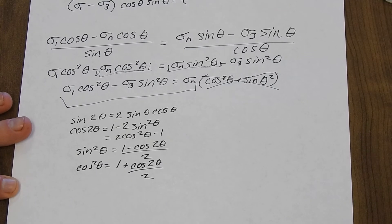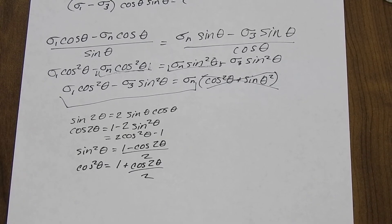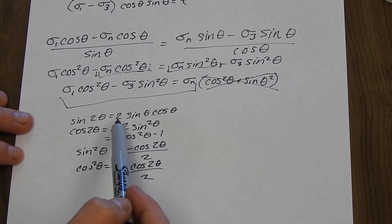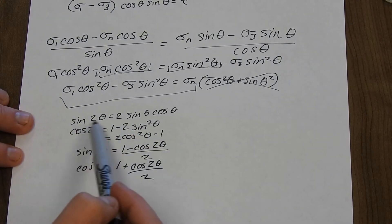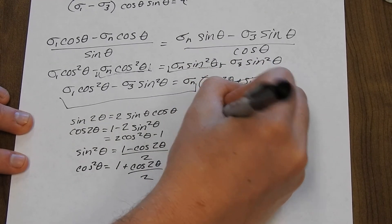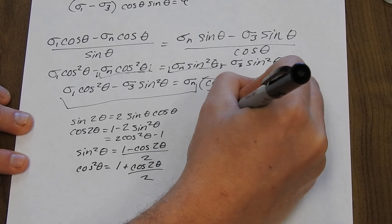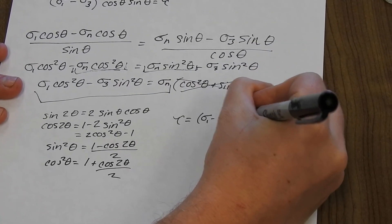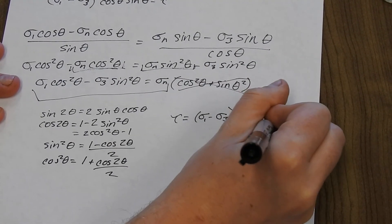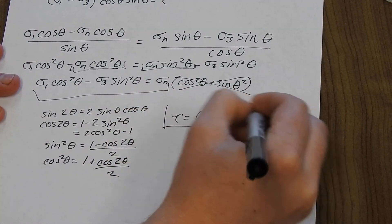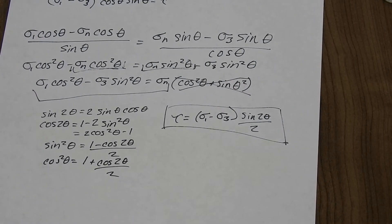Going back to the shear stress formula, we had a factor of sine(θ)cosine(θ). We substitute using the double angle identity: sine(θ)cosine(θ) = sin(2θ)/2. So the expression for shear stress becomes: tau = (sigma_1 minus sigma_3) times sin(2θ)/2.